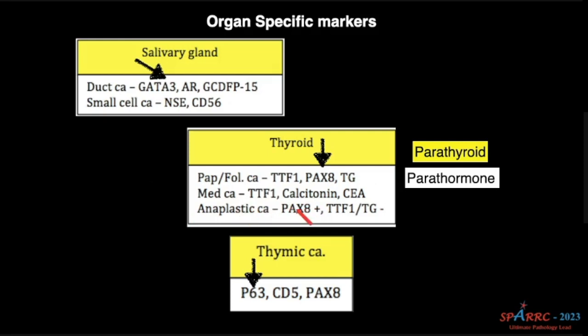For anaplastic carcinoma, it is PAX-8. Please remember TTF can be negative. And one more concept you have to remember: these cytoplasmic markers will be lost when the carcinoma is poorly differentiated, whereas the nuclear markers will be positive irrespective of the differentiation. For example, thyroglobulin is a cytoplasmic marker. It is negative in anaplastic carcinoma, which is a very poorly differentiated thyroid malignancy. Whereas PAX-8 is a nuclear marker — it will be present in well-differentiated carcinomas as well as in undifferentiated and anaplastic carcinomas. That concept you have to remember.